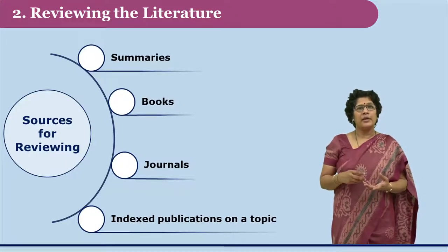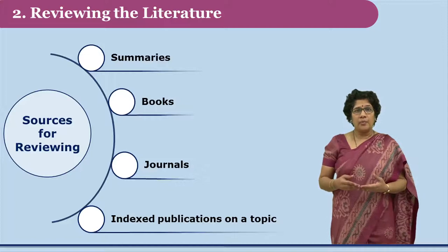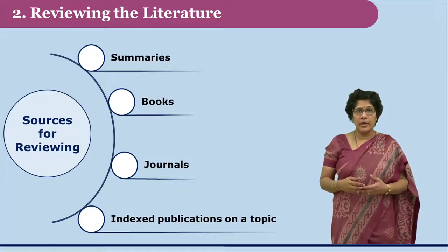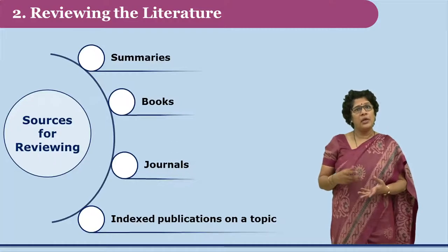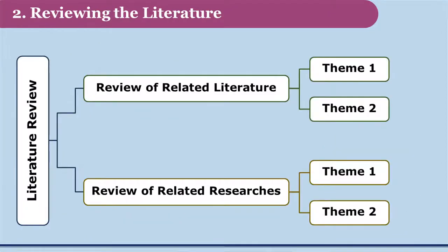While conducting this literature review, the researcher is expected to look into sources such as books, journals, encyclopedias, technical reports, earlier researches, and online or offline databases. Index publications on the topic could also be referred to. This literature review is divided into two parts: the first part dealing with review of theoretical aspects is called the review of related literature, while the part dealing with review of earlier researches is called the review of related researches.